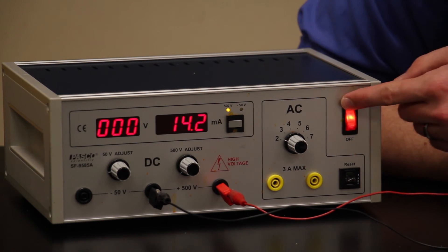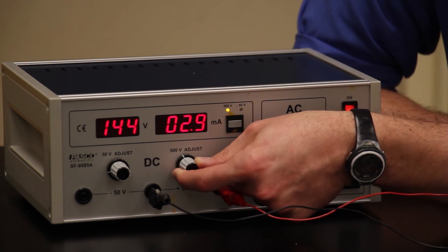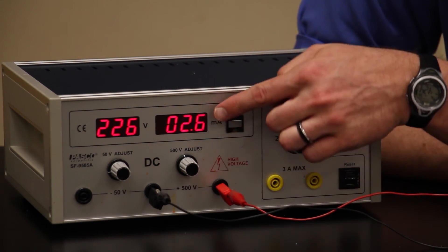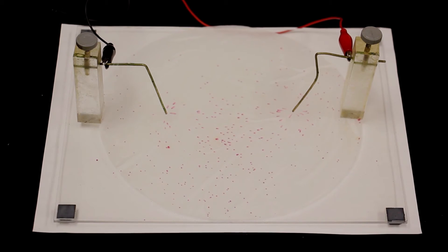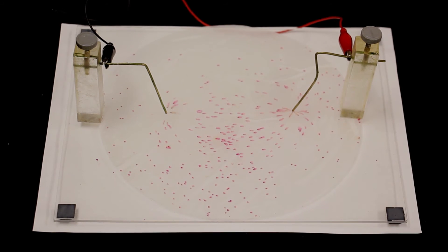Turn it on and set it to about 220 volts. You should get a few milliamps. Now you're ready to dust on the crystals and enjoy the results.